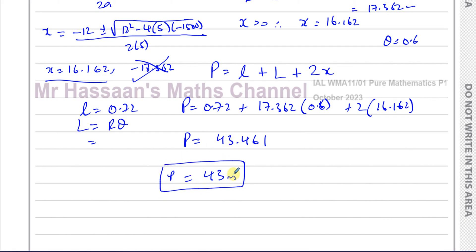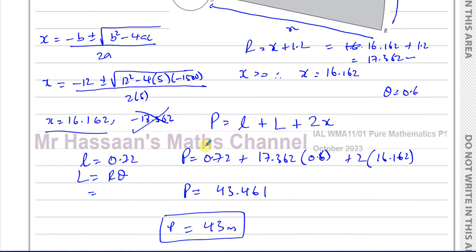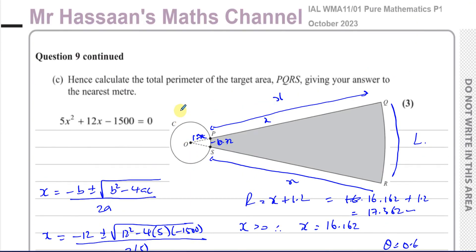That concludes question number nine from the October 2023 Pure Mathematics P1 paper. Other questions from this paper can be found in the playlist. Other questions on the topic of radian measure from P1 Edexcel are in the playlist over here. You can subscribe to the channel by clicking the link. Thank you for watching and see you soon.